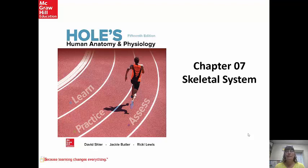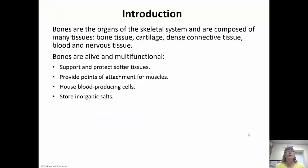Hi guys, so today we are going to talk about chapter 7, which is the skeletal system. It's a really long chapter because they threw everything together into one chapter, so I've divided it into three lectures. First we're going to talk about the bone tissue and associated tissues with it, then the axial skeleton, and finally the appendicular skeleton.